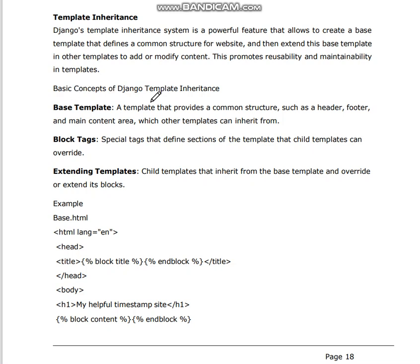The basic concepts of Django template inheritance are: base template, block tags, and extending templates. A base template is a template that provides a common structure such as header, footer, and main content area, which other templates can inherit from. Block tags are special tags that define sections of the template that child templates can override. Just as in class inheritance where a child class inherits features of the parent class, here the child template inherits from the base template.